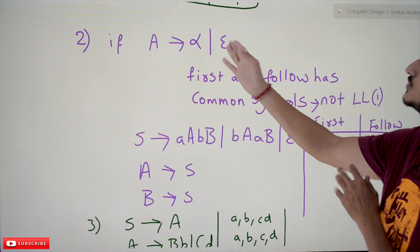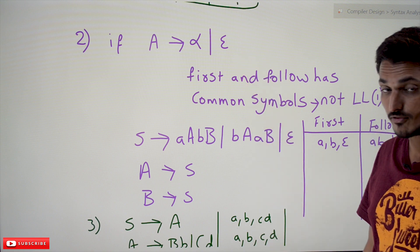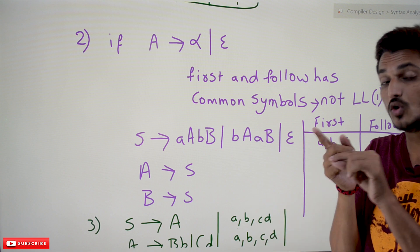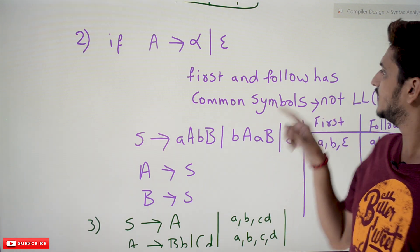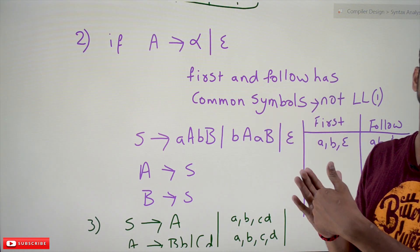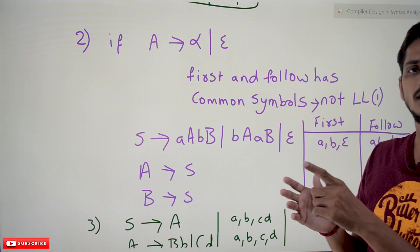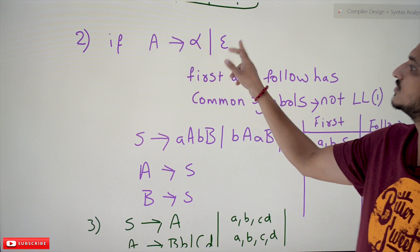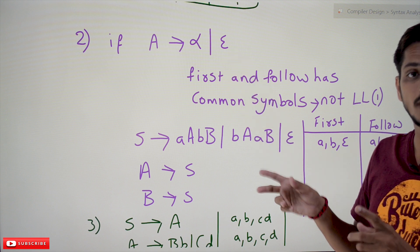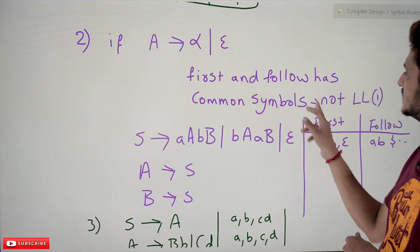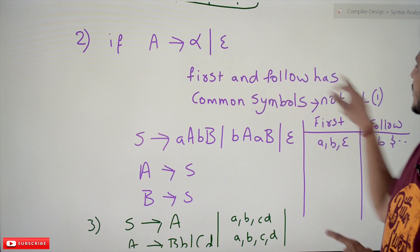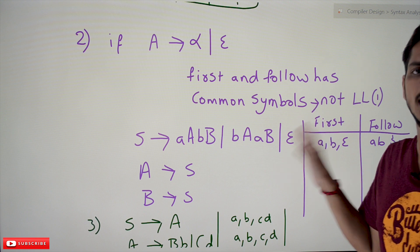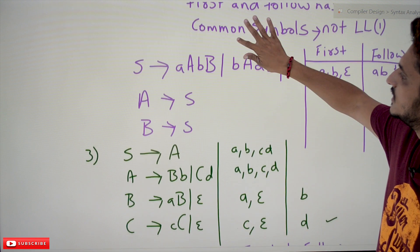The second condition: if the production is of the form A → α | ε, meaning one production derives epsilon, then you have to go with the Follow symbols. If First and Follow have common symbols, then A → ε and A → α come into the same block. If there are common symbols, the given grammar is not LL1. If there are no common symbols, it is LL1.